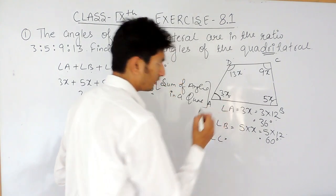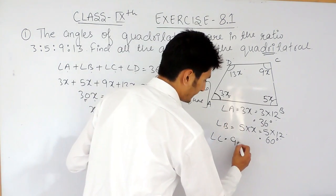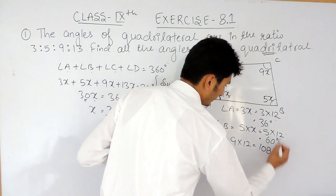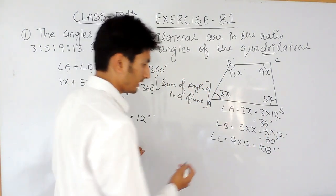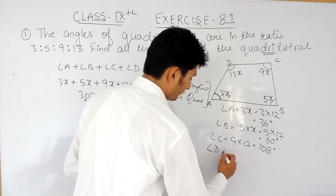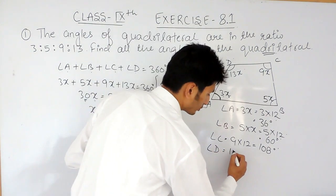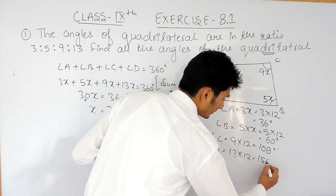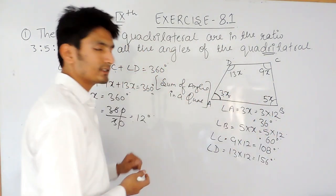Similarly, if you want to find the value of angle C, multiply 9 with 12. That is 108 degrees. If you want to find the value of angle D, that will be equal to 13 multiplied by 12. That is 156 degrees.